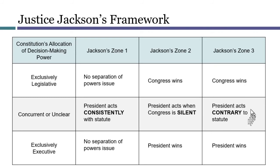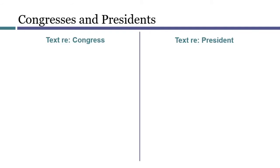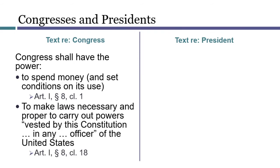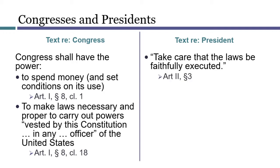In Zone 3, Justice Jackson said Congress should win, either all the time or virtually all the time. The President may not act contrary to statute. As a textual matter, Congress has some important powers that can be and are used to direct the activities of the Executive Branch. These include the Spending Power and the Necessary and Proper Clause. So Congress has grounds to issue some instructions to Presidents. When Congress speaks, the President shall take care that the laws be faithfully executed — so acting contrary to a statute is really not a faithful execution of Congress's laws.